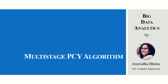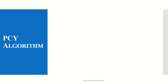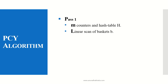We'll see what is a multi-stage PCY algorithm for big data analytics and how this algorithm helps to identify false positives in an item set. Let's first review the PCY algorithm. In the PCY algorithm, we need to find out the counters and we create a hash table. A linear scan of baskets is done — as we scan the baskets we find out the items and put them down from a given item table transaction ID.